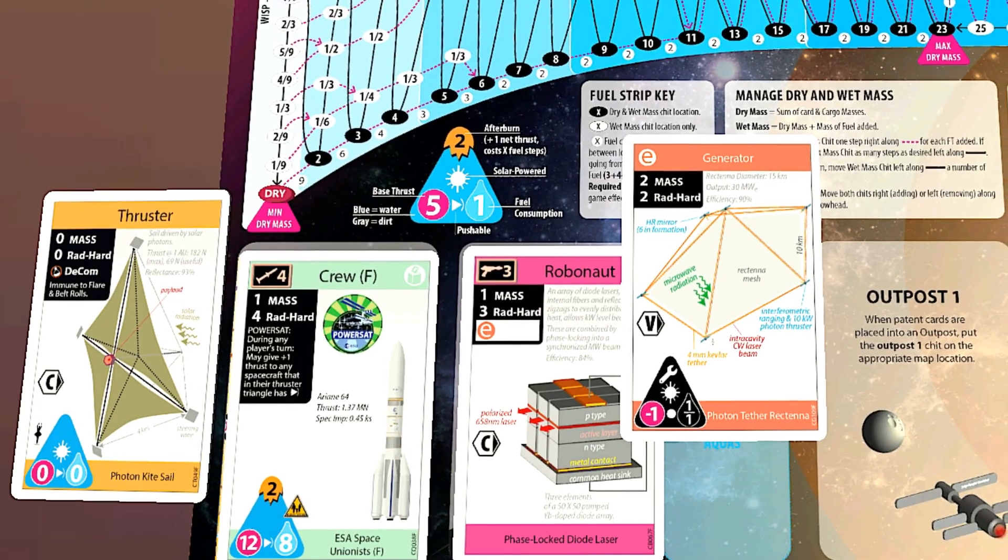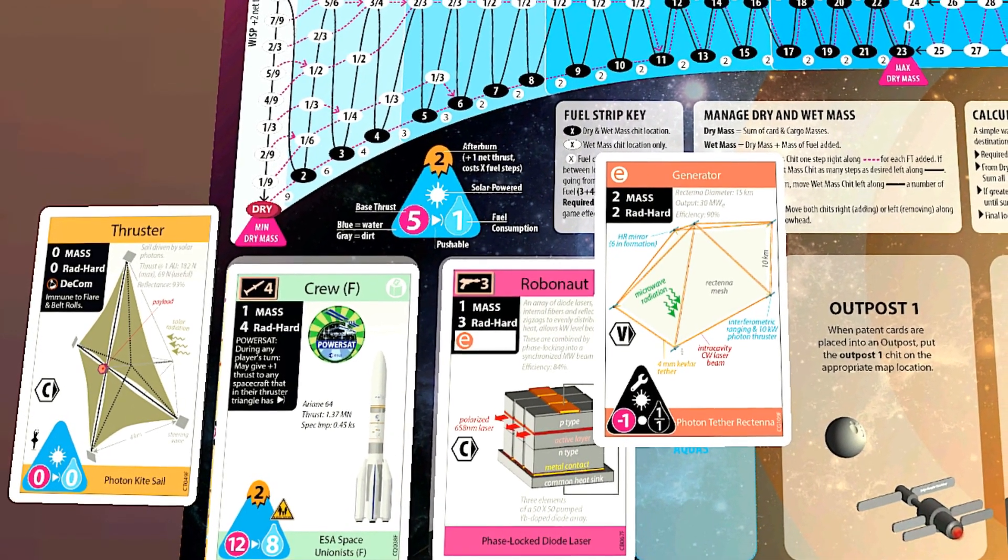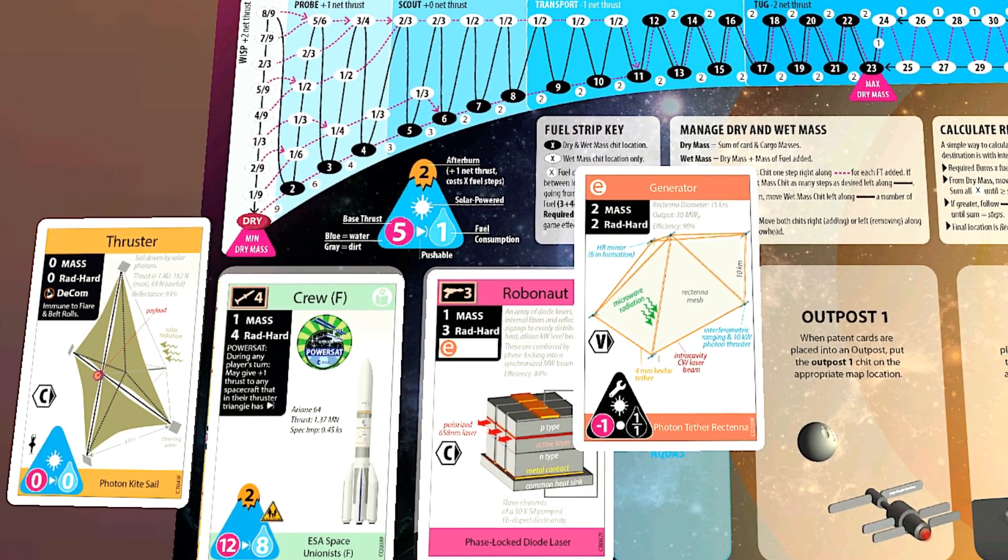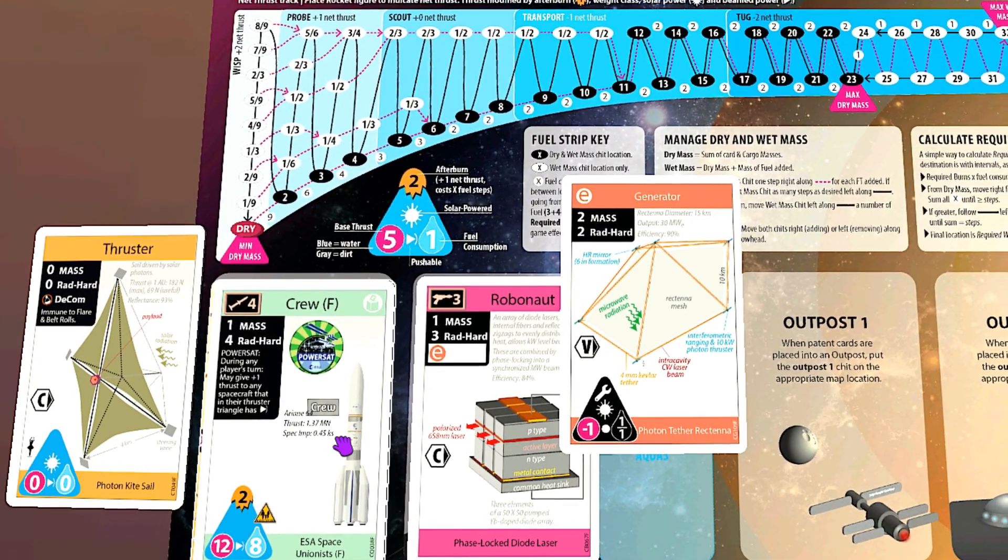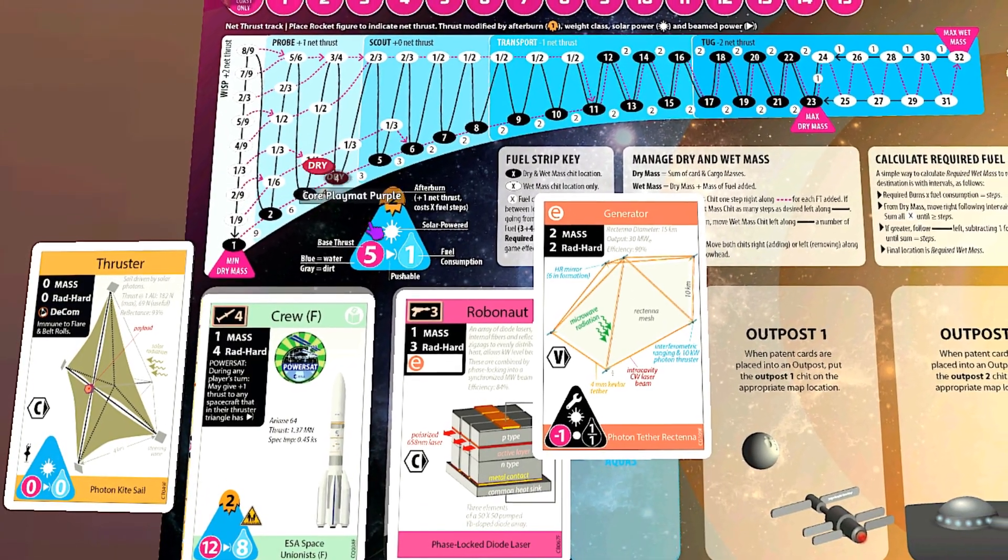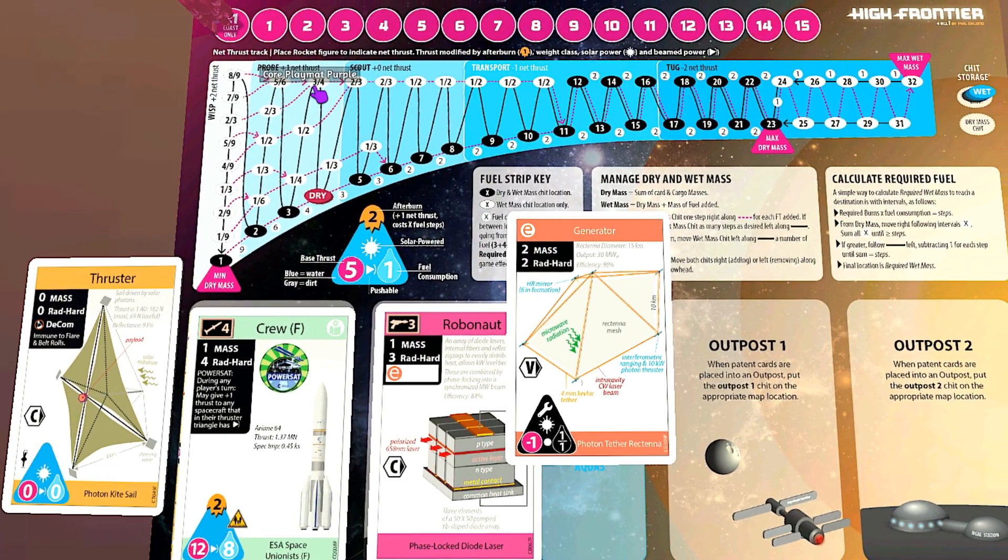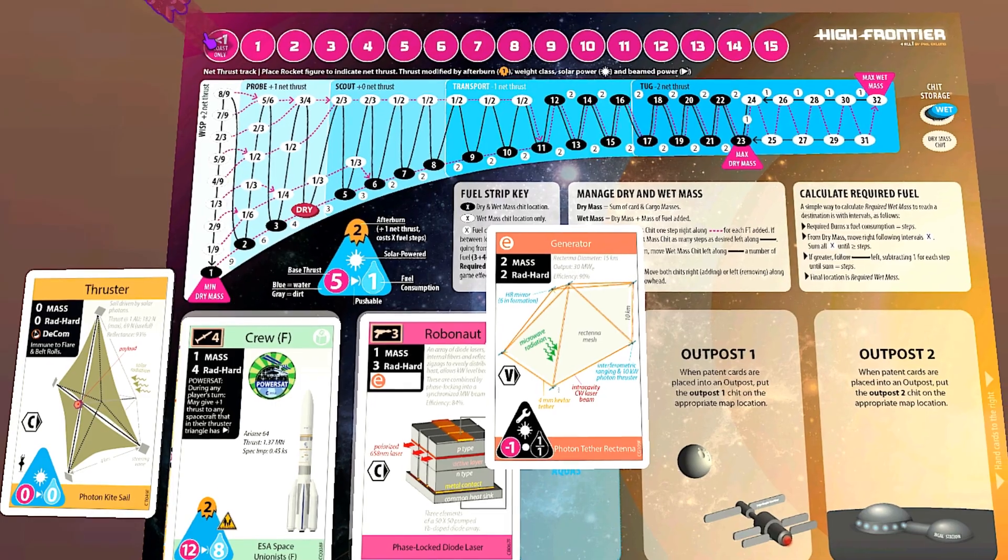And this is the kind of rocket that I find really captivating for some reason. The thruster is the sail—it has zero mass. The robonaut and the crew have a mass of one mass each, and the generator has a mass of two. This gives us a total dry mass of four, which puts us in the probe category. Because we are a probe, we get plus one to our net thrust.